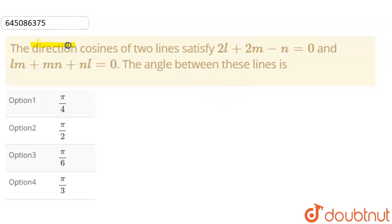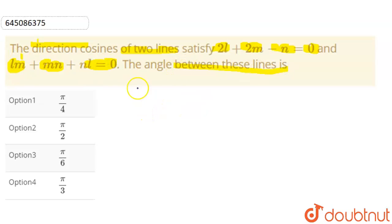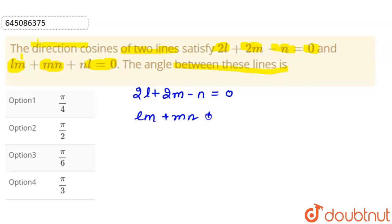Today our question is: the direction cosines of two lines satisfy 2l + 2m − n = 0 and lm + mn + nl = 0. We need to find the angle between these lines. So we have been given these two equations.